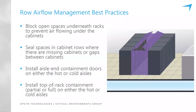The second best practice is sealing open spaces in the cabinet rows. Depending on site conditions, some layouts end up with gaps between the racks due to support structures, other barriers in the room, or intentional space left for a future roll-in rack. The third is installing aisle doors, which prevents the wraparound mixing that occurs at the islands if doors are not used. Doors are very important and available on many designs from a variety of manufacturers.